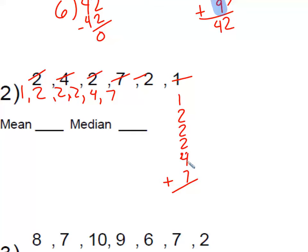7, 8, 9, 10, 11. And 11 plus 7 is 18. So my sum is 18. And now I'm going to find my, I need to look at how many values I have. I have 1, 2, 3, 4, 5, 6 values.